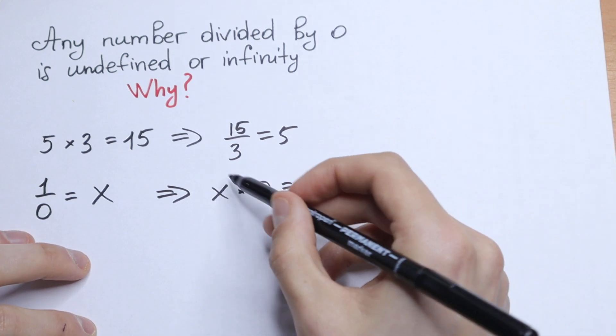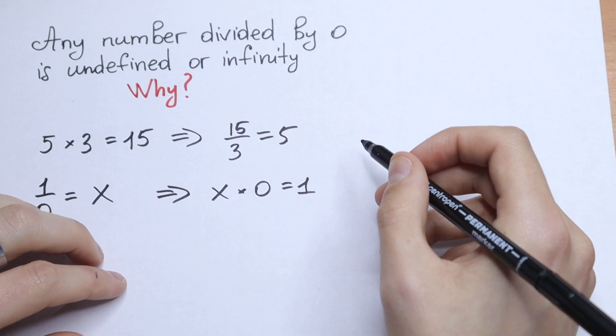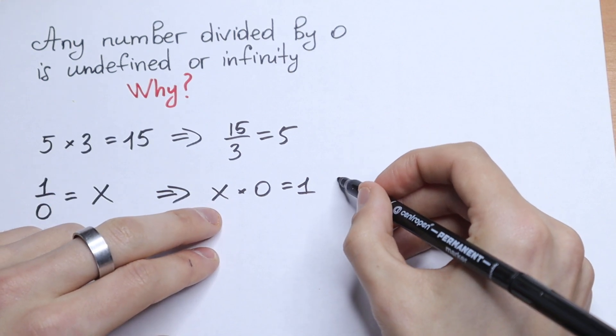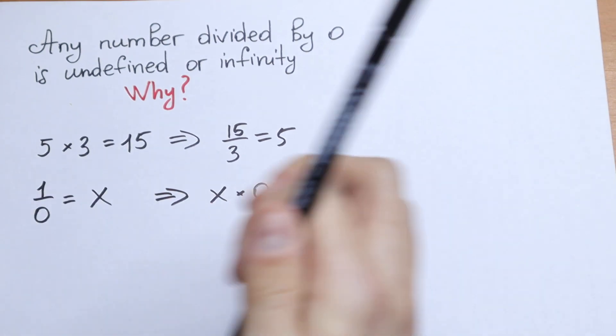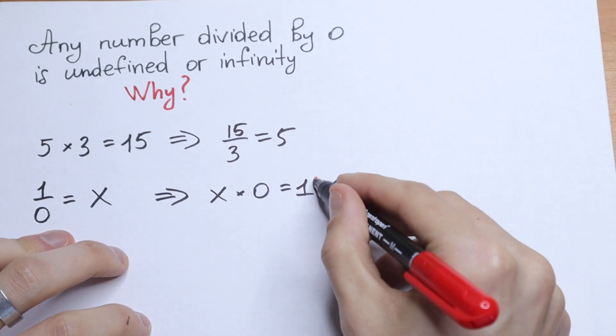And as you can see, any number multiplied by 0 would equal 1. This is not correct. This fact is not correct. So moreover, I want to prove another way this problem.